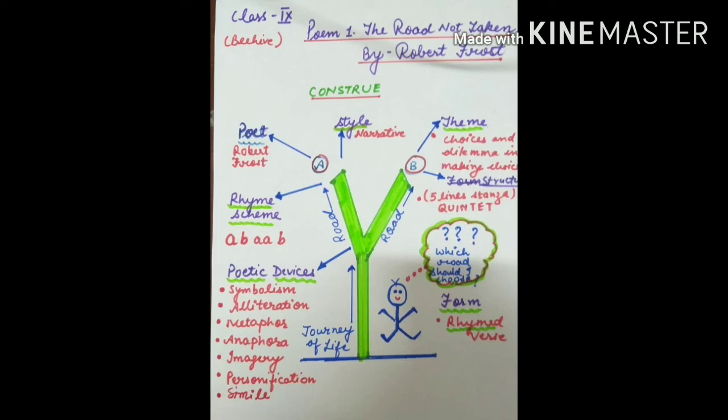Now let's discuss the poetic devices. Poetic devices are the tools which are used by the poet to enhance the meaning or add rhythm in the poem. The poetic devices used in this poem are: symbolism, alliteration, metaphor, anaphora, imagery, personification, and simile.